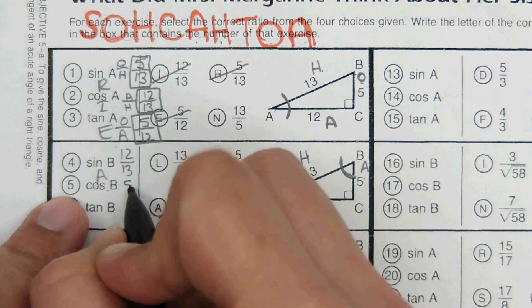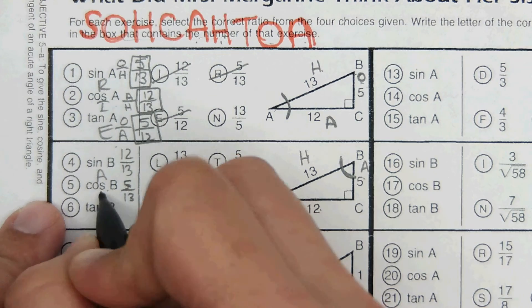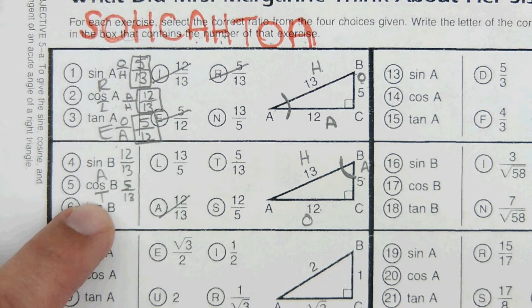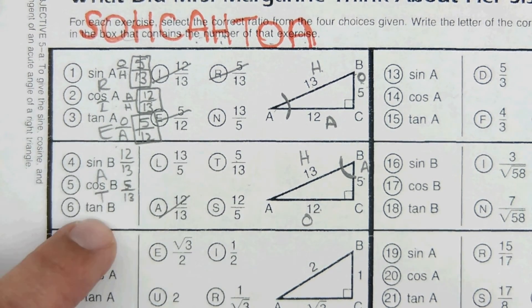And cosine, adjacent over hypotenuse, 5 over 13, T.